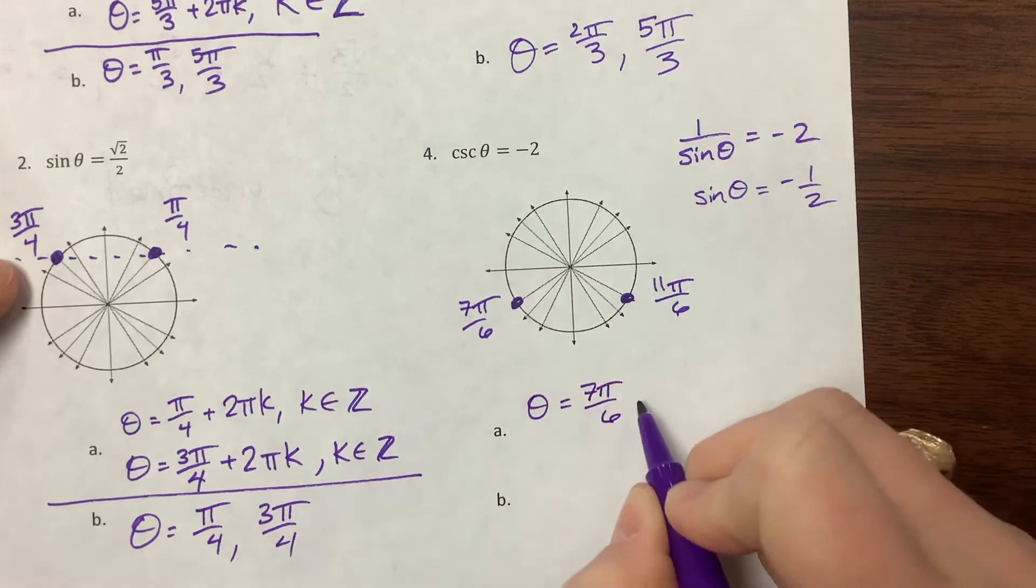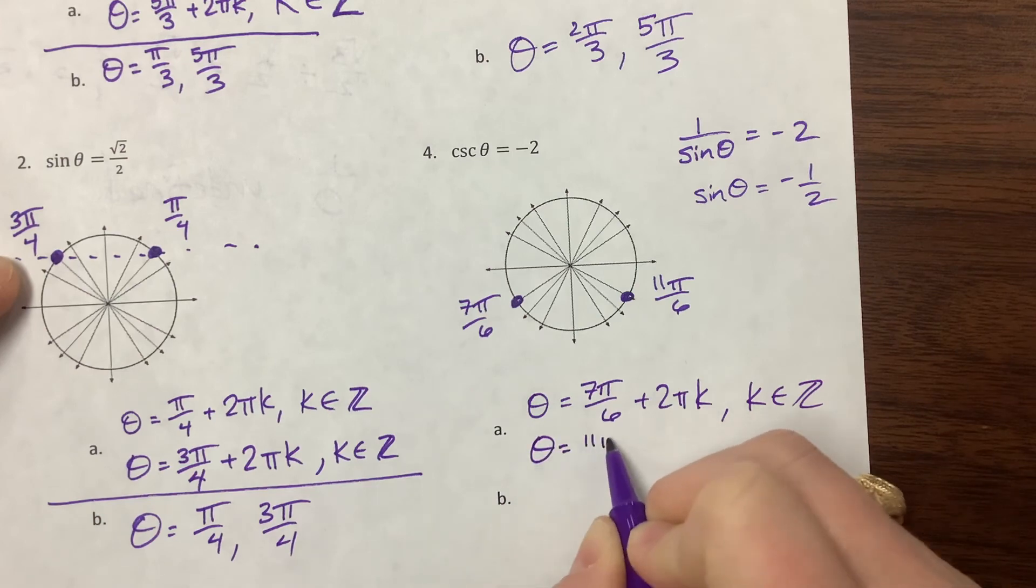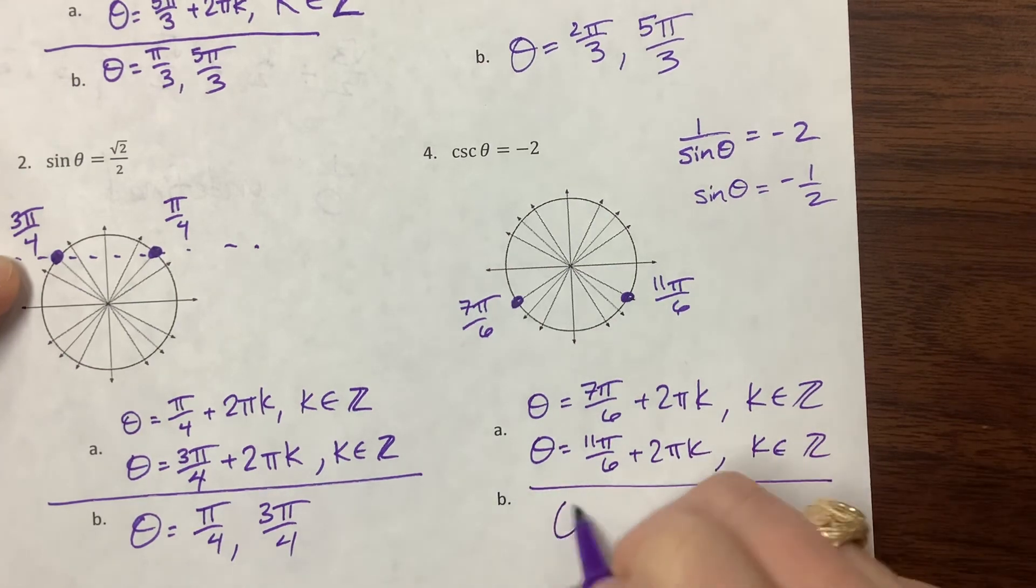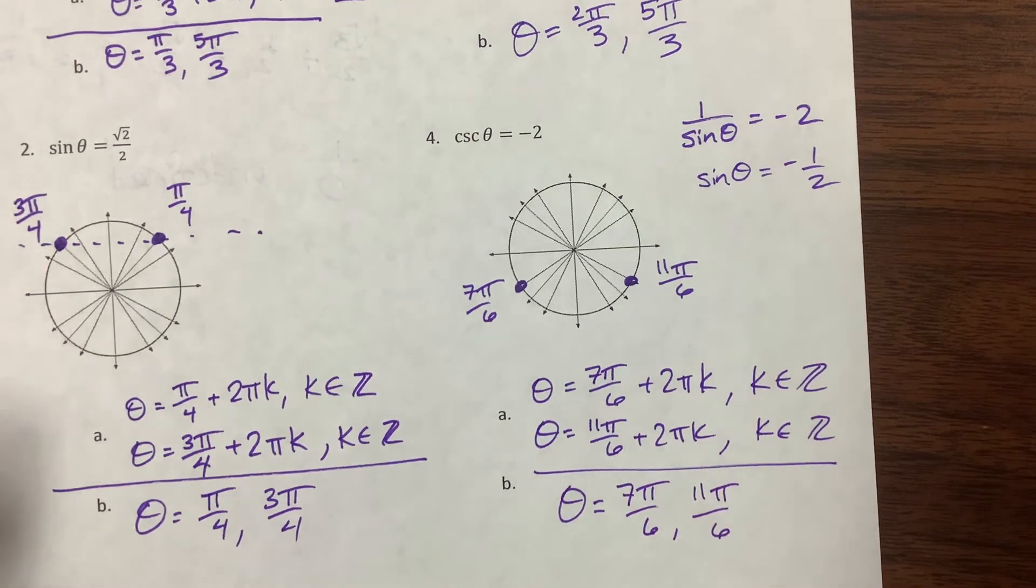So this would be theta is equal to 7 pi over 6. They said find all, so we have to do 2 pi k. And it also includes this family, 11 pi over 6 plus 2 pi k, where k is an element of the integers. And then if I only want it on one time around the unit circle, there we go. I hope that's clear. I'm not likely to make you answer both ways on each problem. I just wanted to practice it this way in the notes. So you just always want to make sure you read the directions. So if you don't answer it the correct way, then you might not get the full points. So pay attention to what they're asking and make sure you answer the question that's asked. Practice, practice, practice. Make sure you know the unit circle inside out, upside down, and backwards. It's hugely important moving forward. Good luck.